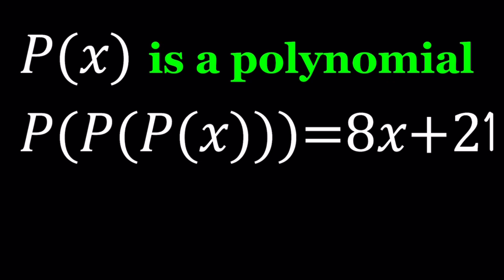So what are polynomials? Polynomials are basically functions that are a sum of powers of x, where the powers are non-negative integers. We have a polynomial being composed with itself three times, or should I say two times? It's kind of like a p composition, p of p of p of x. And that gives us 8x plus 21, and we're trying to solve for p of x.